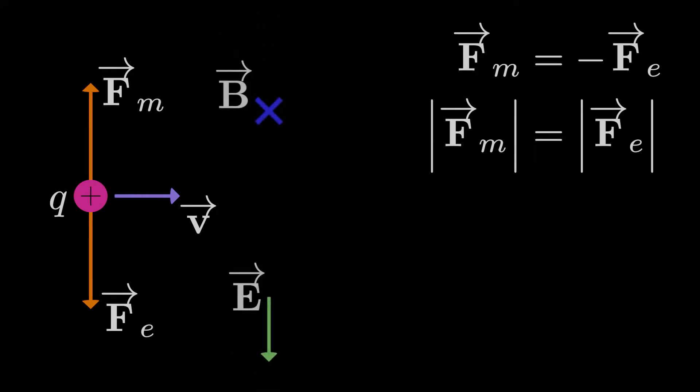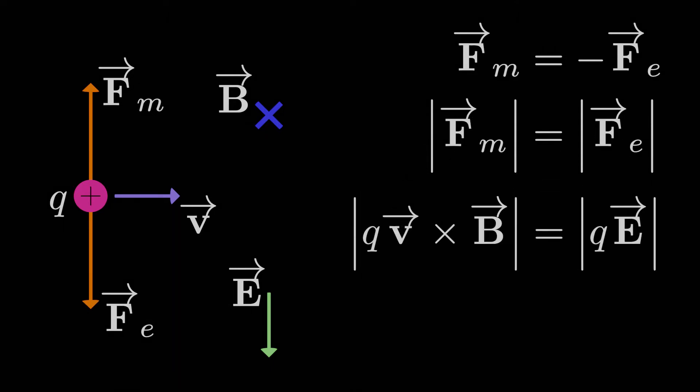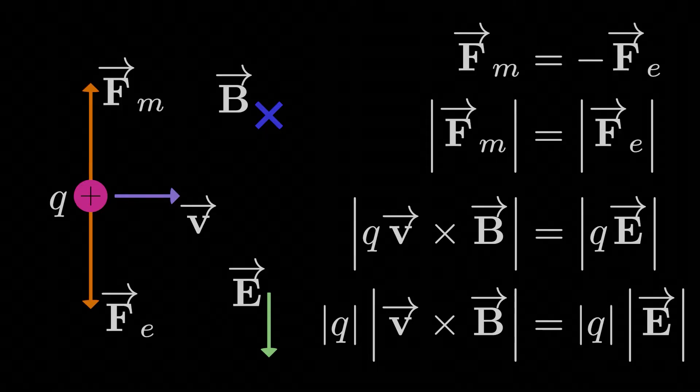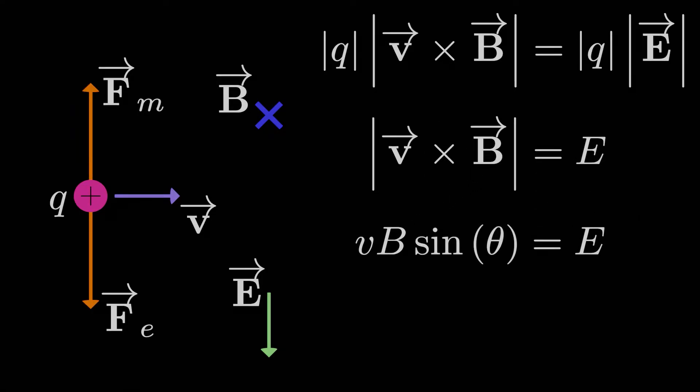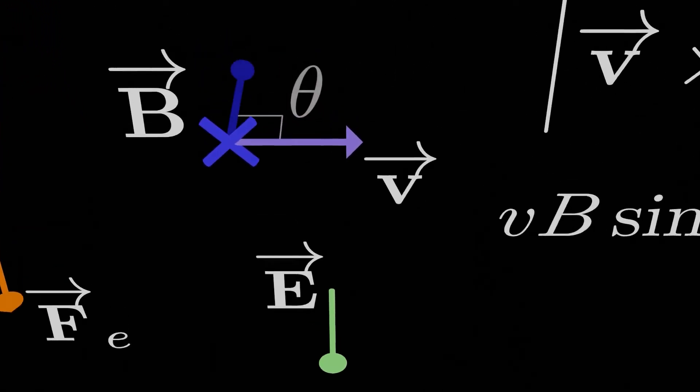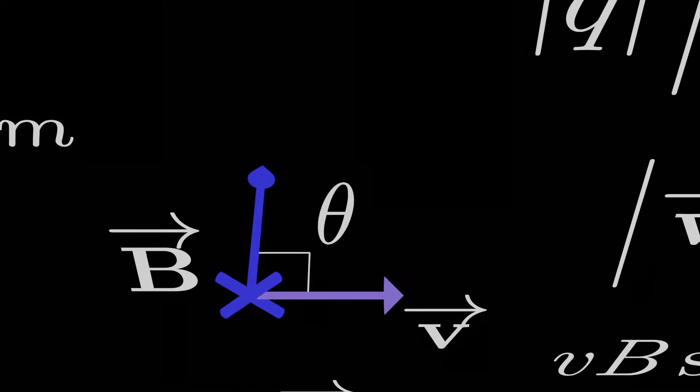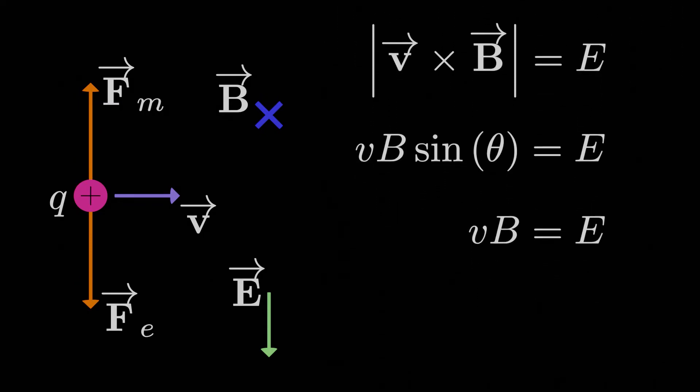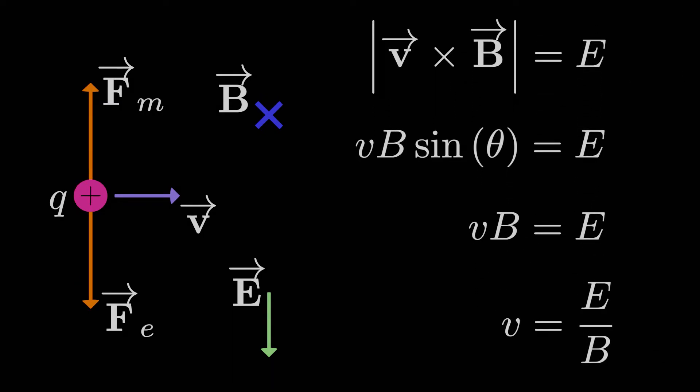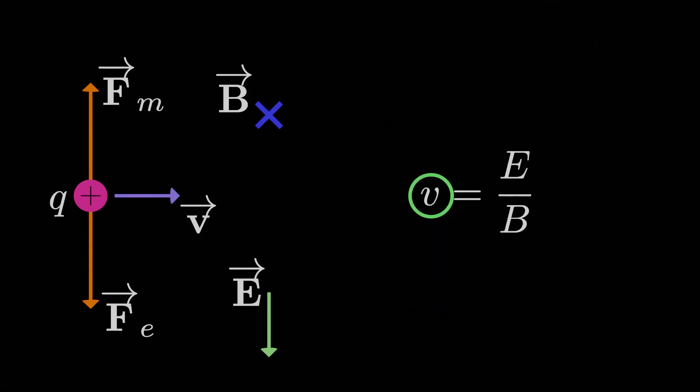Plus, we already know the directions of everything, so a vector equation will just give us redundant information. For the magnetic force, we have a magnitude of QV cross B, and for the electric force, we have a magnitude of QE. Conveniently, we can pull out the absolute value of the charge on both sides, which cancels. And the magnitude of v cross B is just VB sine theta. No more vectors here, all scalars. Here, since we conveniently chose the velocity and magnetic fields to be at right angles, theta is 90 degrees, and sine theta is 1, leaving us with just the speed times the magnetic field strength on the left. Now all we have to do is divide by B, so V equals E over B. The speed for which the two forces balance out is equal to the electric field strength divided by the magnetic field strength.